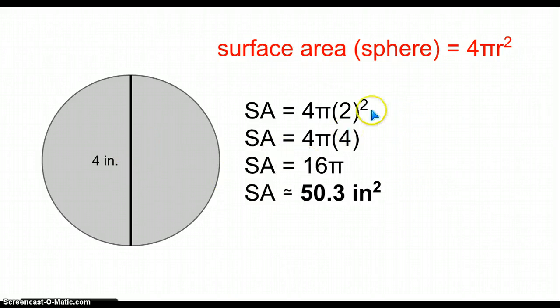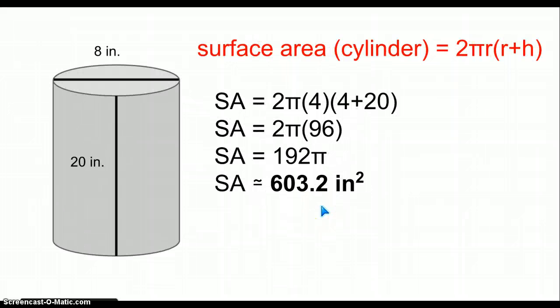Now you take the same measurements, radiuses too, and for the surface area of the head, you'd get about 50.3 inches squared. For the surface area of the torso, the body, you'd get around 603.2 inches squared.